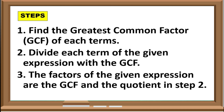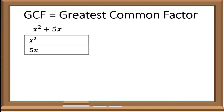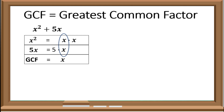Let us practice first in solving the greatest common factor of an expression. We have an expression x squared plus 5x. First, we need to look for the prime factors of each term. For x squared, that would be x times x. For 5x, we have 5 times x. Second, we need to identify the common factors of each term. In this case, we have x. So the GCF of x squared plus 5x is x.